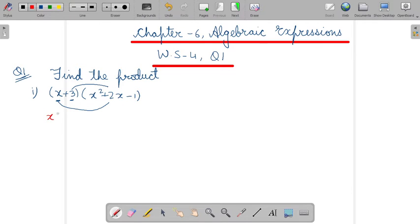So first we will write x and these three terms we will write it together. Now we will write plus 3 and again we will write these three terms together.